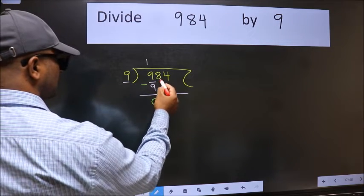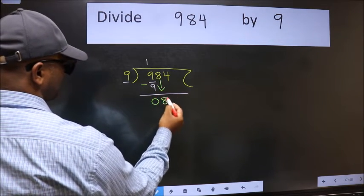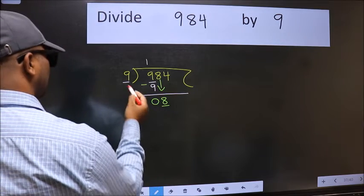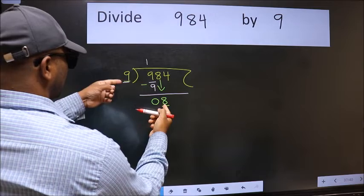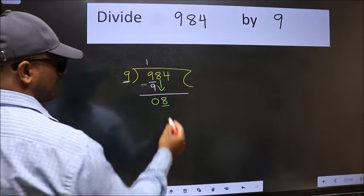After this, bring down the beside number. So 8 down. Now here we have 8 and here 9. 8 is smaller than 9. So we should bring down the second number.